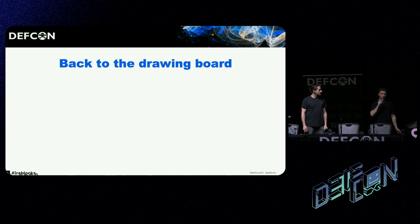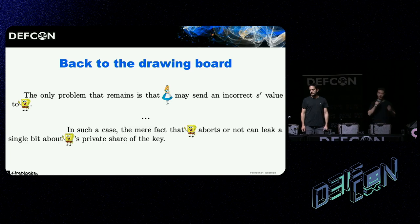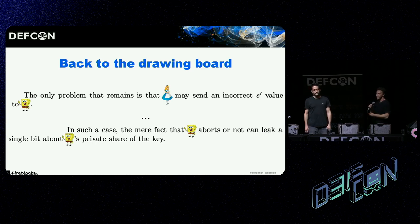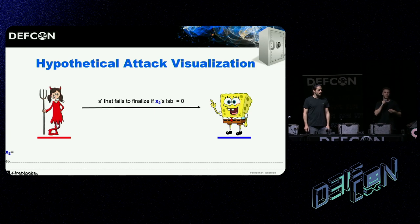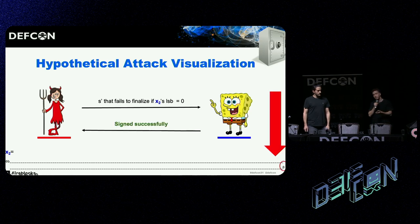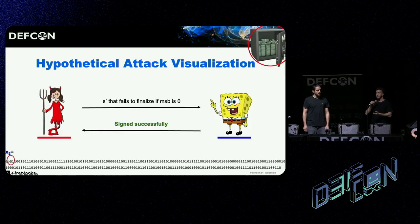The paper is very clear about why it's important. It says the mere fact that Bob aborts or not can leak a single bit about Bob's private share of the key. Taking this intuition to its logical conclusion, we thought of a hypothetical attack: Alice crafts a malicious signature that fails to verify depending on a single bit of Bob's key share. By seeing if it verifies or not, she learns whether that bit is one or zero. She does this again and again — 256 signatures later, she has the entire key share of Bob.